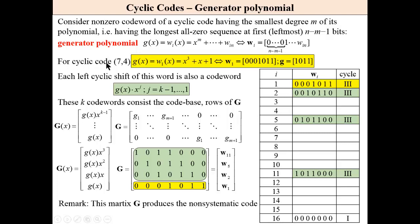For cyclic code (7,4), this polynomial is x to the power of 3 plus x plus 1, which corresponds to the following codeword in binary description. Then, each left cyclic shift of this word is also a codeword. These k codewords consist the code base, rows of the generator matrix.